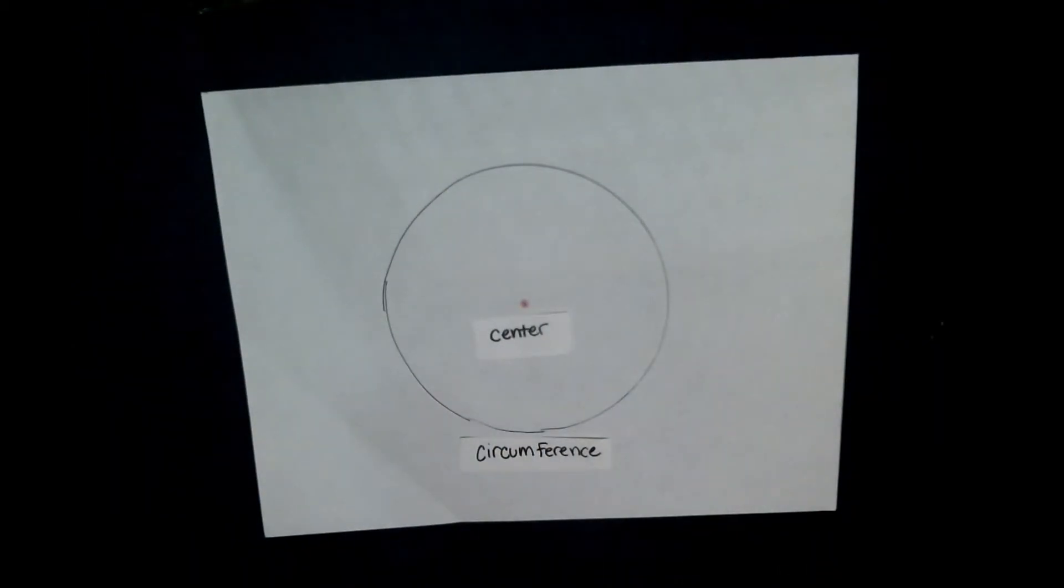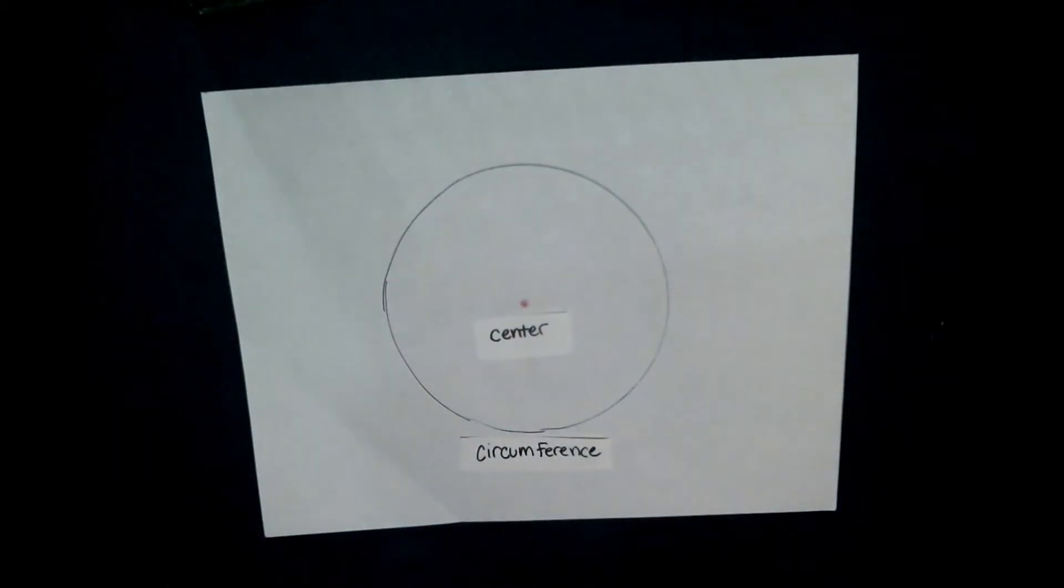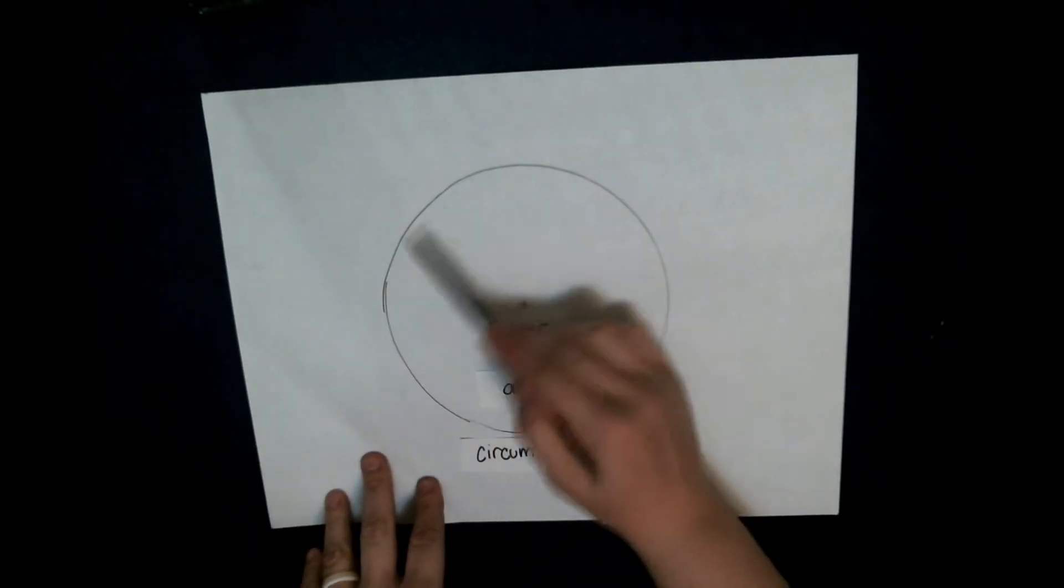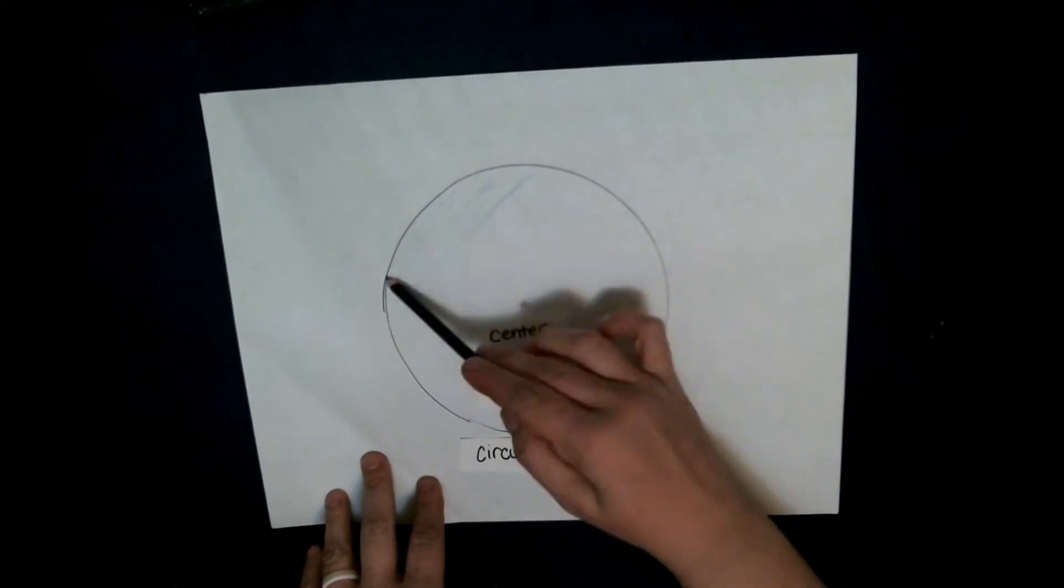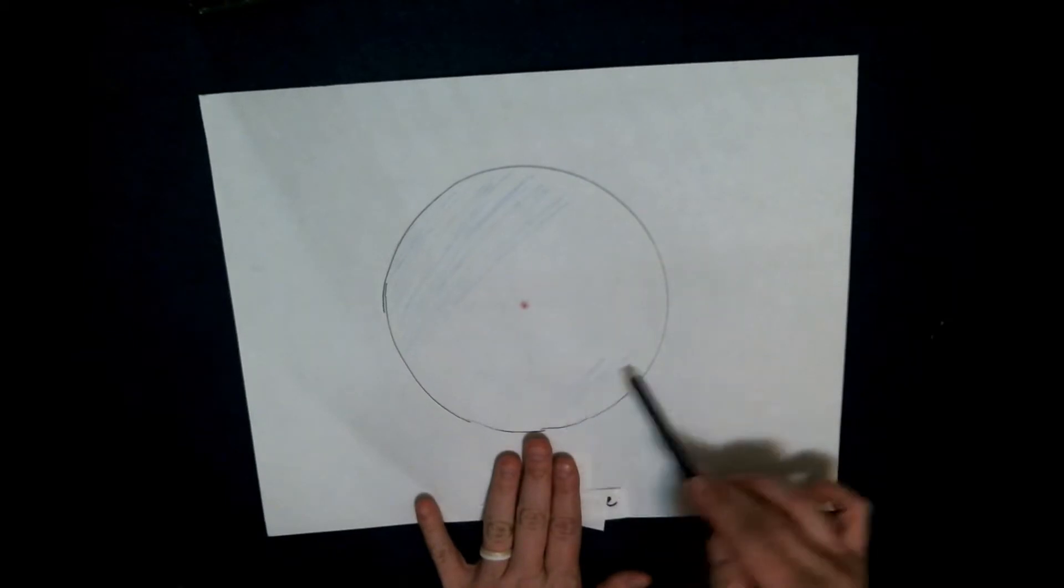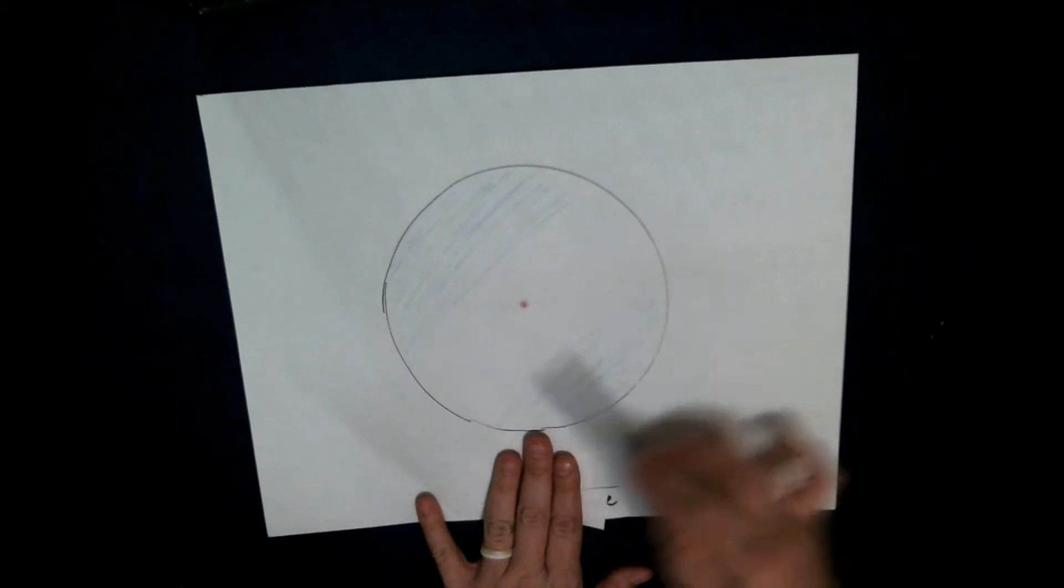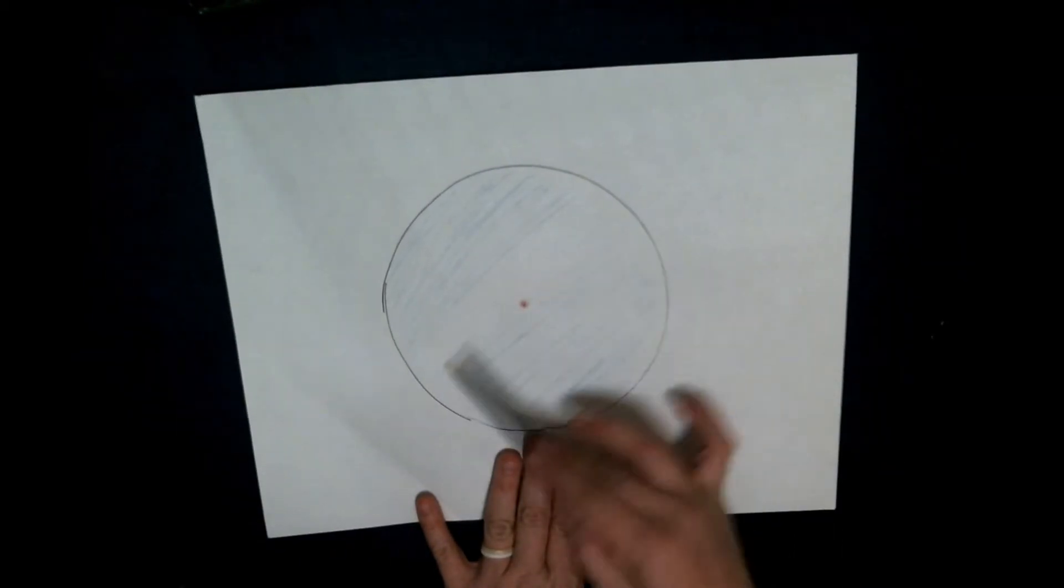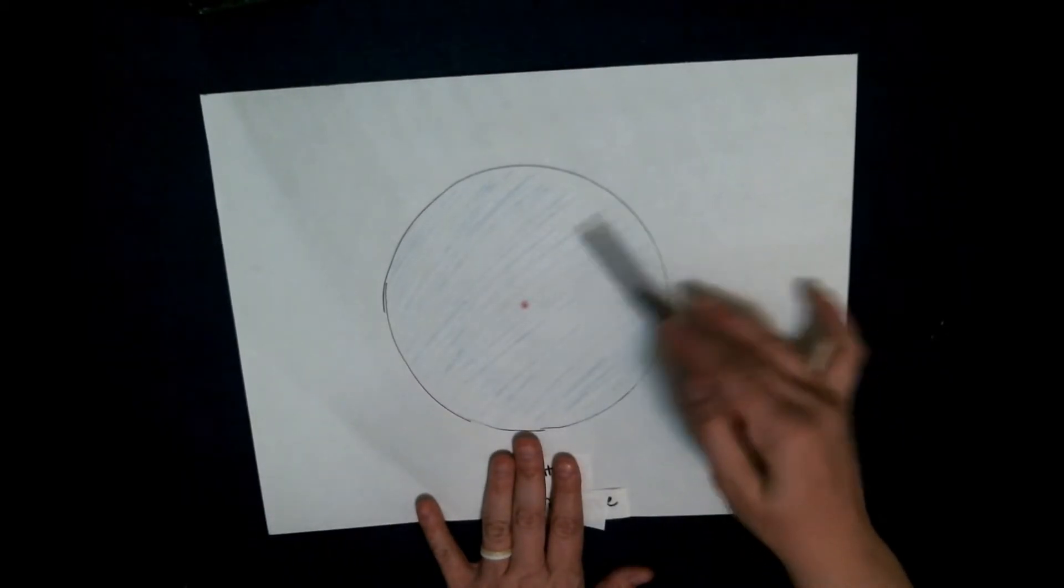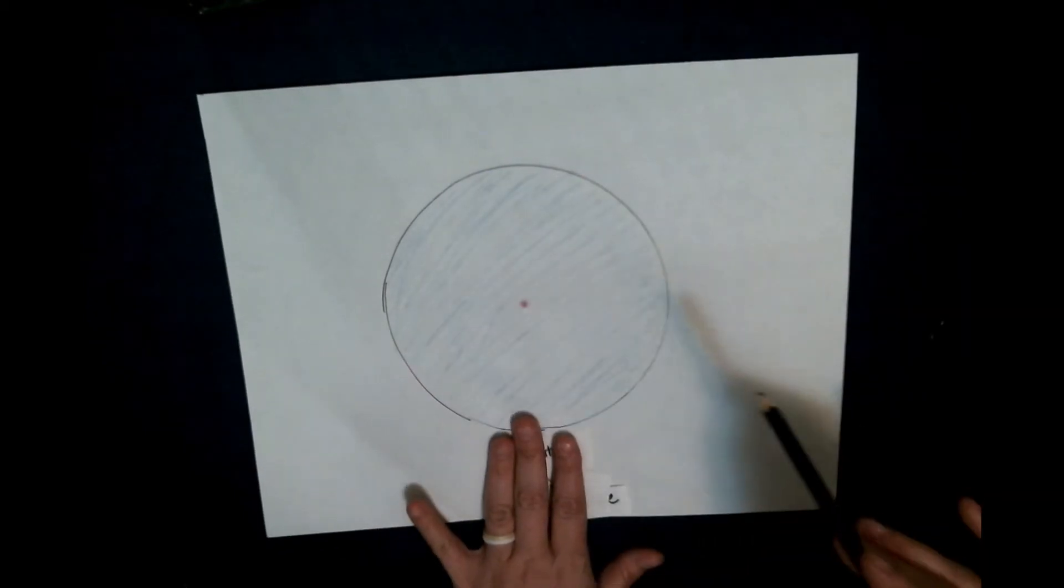And the next part is all the space inside of the circle. It has a similar name to all the space inside this rectangle. That's called the area. The space inside the whole circle. I'm going to just very carefully and lightly, let me move my words real quick. All of this space inside this circle is called the area, the area of the circle.